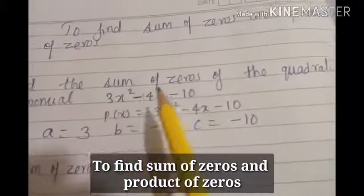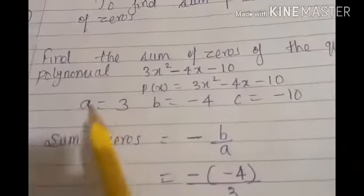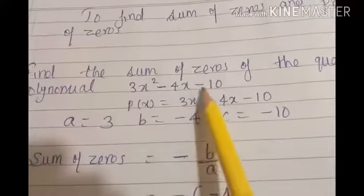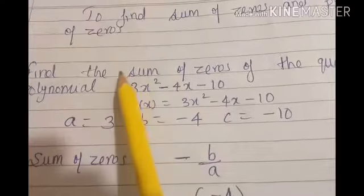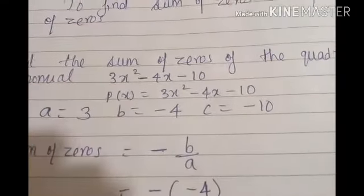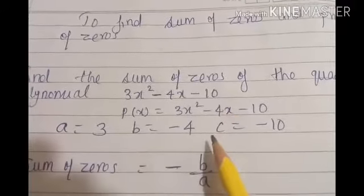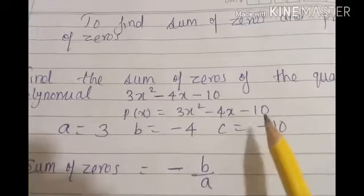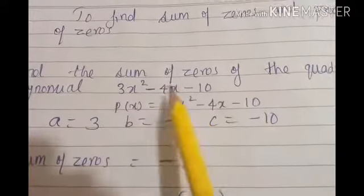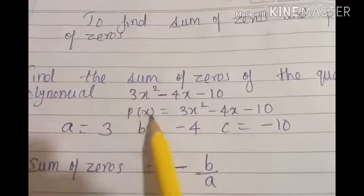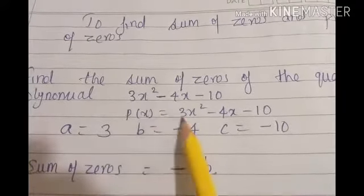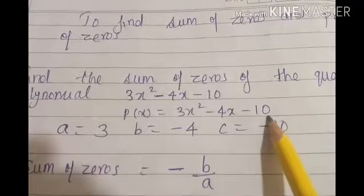The question is: find the sum of zeros of the quadratic polynomial 3x² minus 4x minus 10. You are not asked to find the zeros — you are directly asked to find the sum of zeros. So write the quadratic polynomial p(x) as p(x) = 3x² minus 4x minus 10.